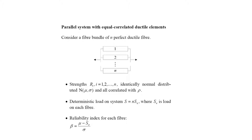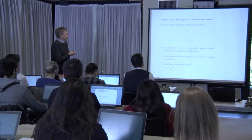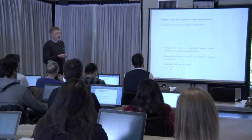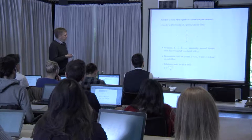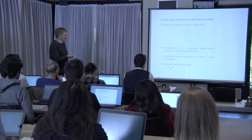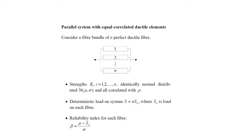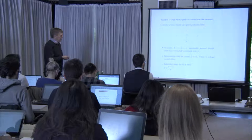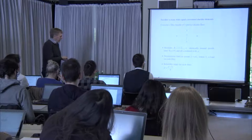A simple illustrative example considers N ductile components in parallel with the same pairwise correlation coefficient. This could represent a fiber bundle with N fibers. The strengths are assumed equal for all components, normally distributed with mean mu and standard deviation sigma. Because the system is ductile, the total bundle strength is the sum of individual fiber strengths, so the mean of the bundle is N times the individual mean.